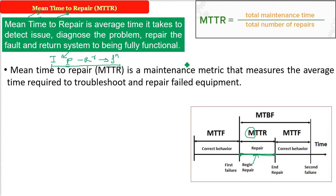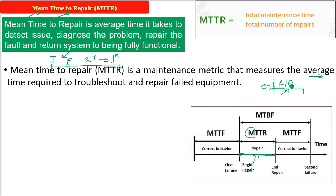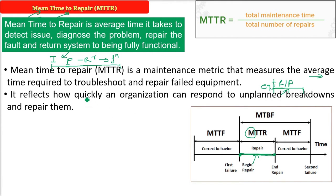MTTR is a maintenance metric that measures the average time — not one time, but the average of various times — required to troubleshoot and repair failed equipment. MTTR equals total maintenance time divided by the total number of repairs. It is an indication for any organization of how it responds to unplanned breakdowns and repairs them.